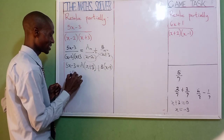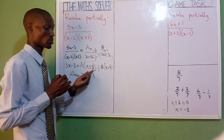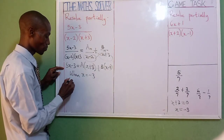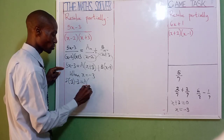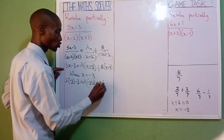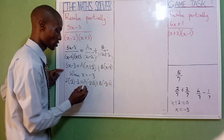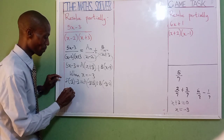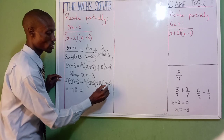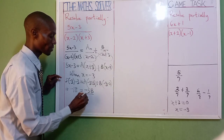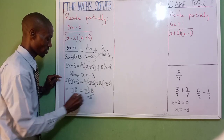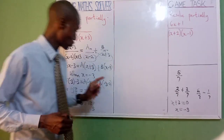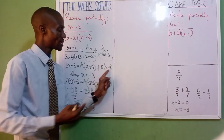So x equal to minus 3. When x equals minus 3, by the time you put minus 3 here, this bracket will disappear. So: 5 into bracket x is minus 3, minus 3 equal to A into bracket minus 3 plus 3, plus B into bracket x minus 3 minus 2. Notice that minus 3 plus 3 is already 0 — it will cancel your A. So: minus 15 minus 3, that is minus 18, equal to minus 3 minus 2, that is minus 5, so minus 5b. Divide both sides by minus 5: b equals 18 over 5.